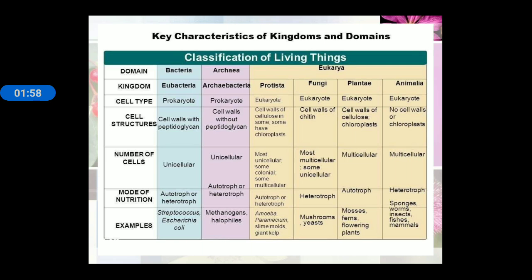Next is Archaea: prokaryotic cell type; cell walls without peptidoglycan; unicellular; autotrophic or heterotrophic. Examples are methanogens and halophiles. Then Protista: eukaryotic cell type; cell wall of cellulose and some have chloroplasts; mostly unicellular; autotrophic and heterotrophic mode of nutrition. Examples are amoeba, paramecium, and slime mold.